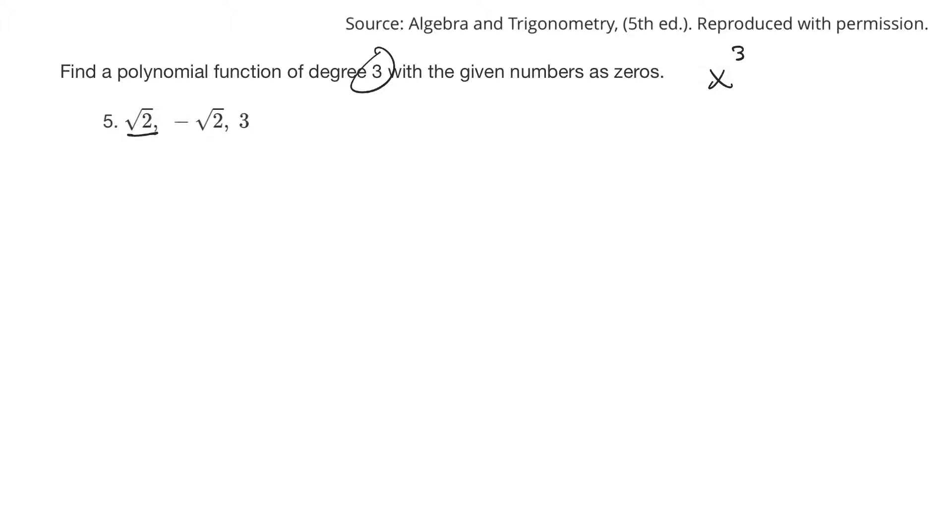So if this is a zero, then a factor would be x minus root 2. If this is a zero, the factor would be x plus root 2. And if this is a zero, the factor would be x minus 3. So really I could just say there's my polynomial, but they probably want you to FOIL multiply it all out.